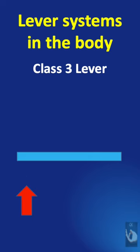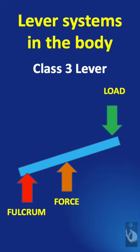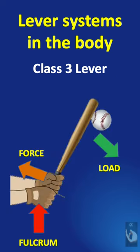In class 3 lever, the fulcrum is again on one end but the load is on the other end and the needed force is in between. So here again, this force should counteract the load that is being applied. Example is hitting a baseball with a bat.